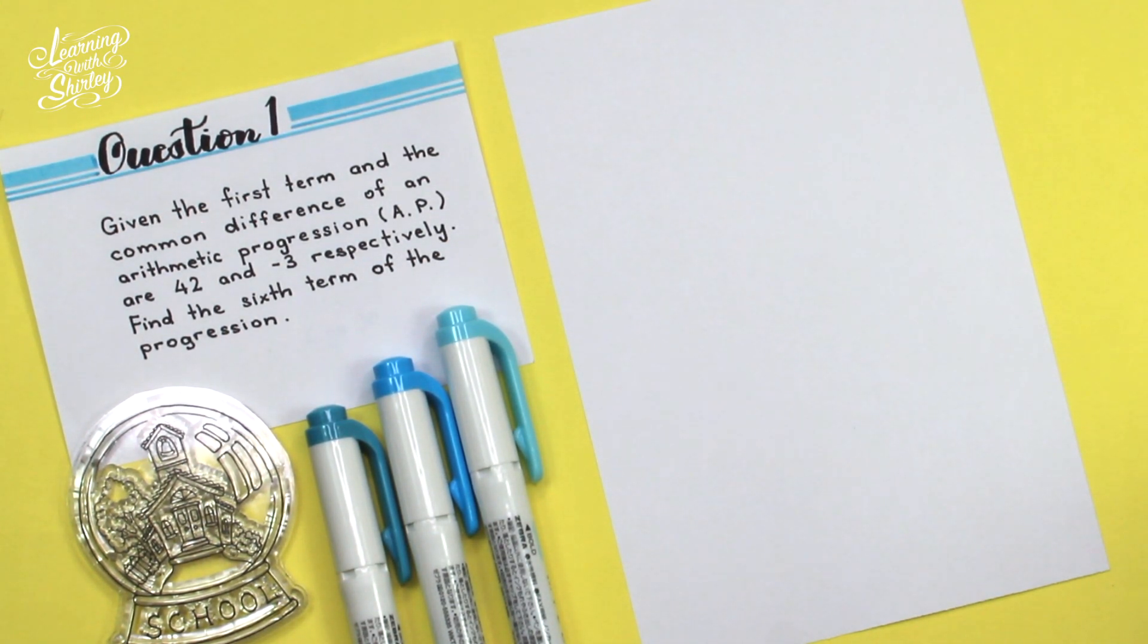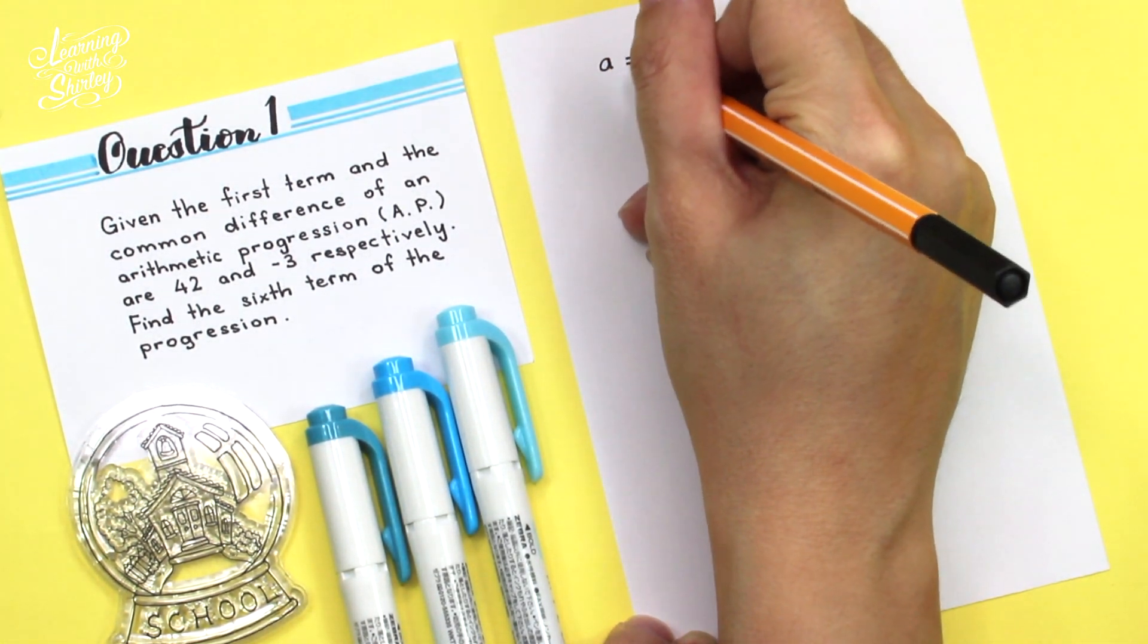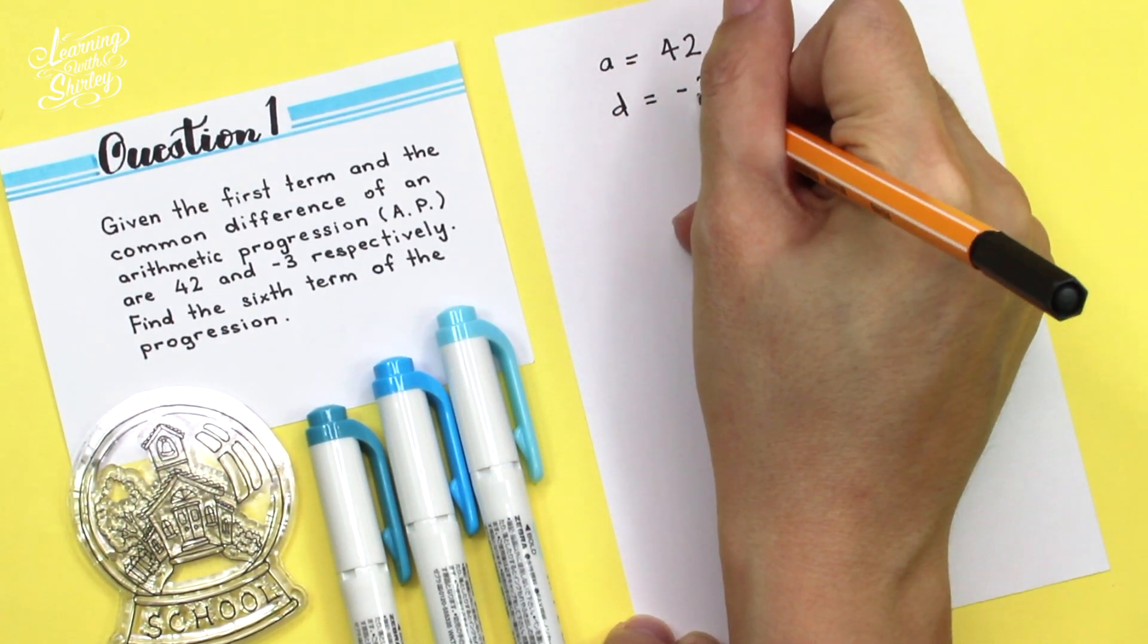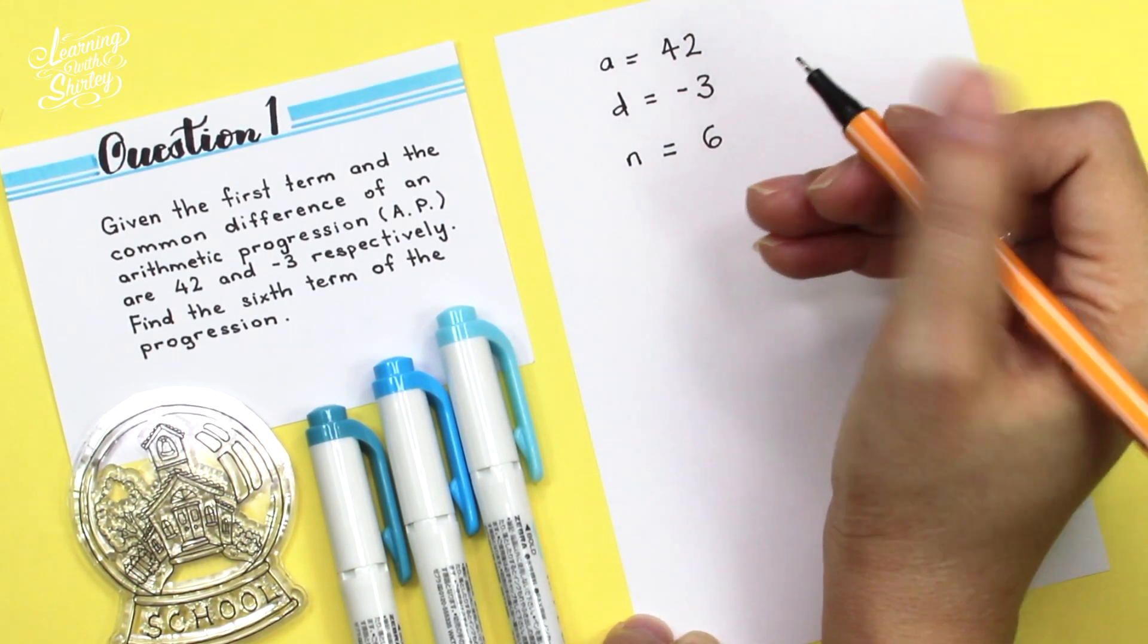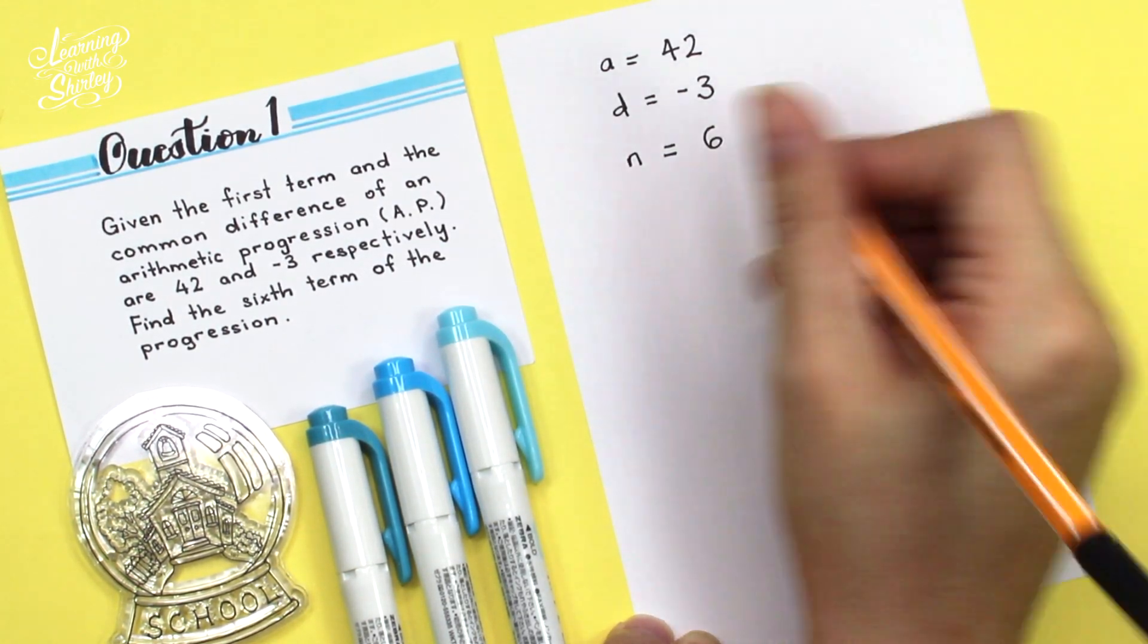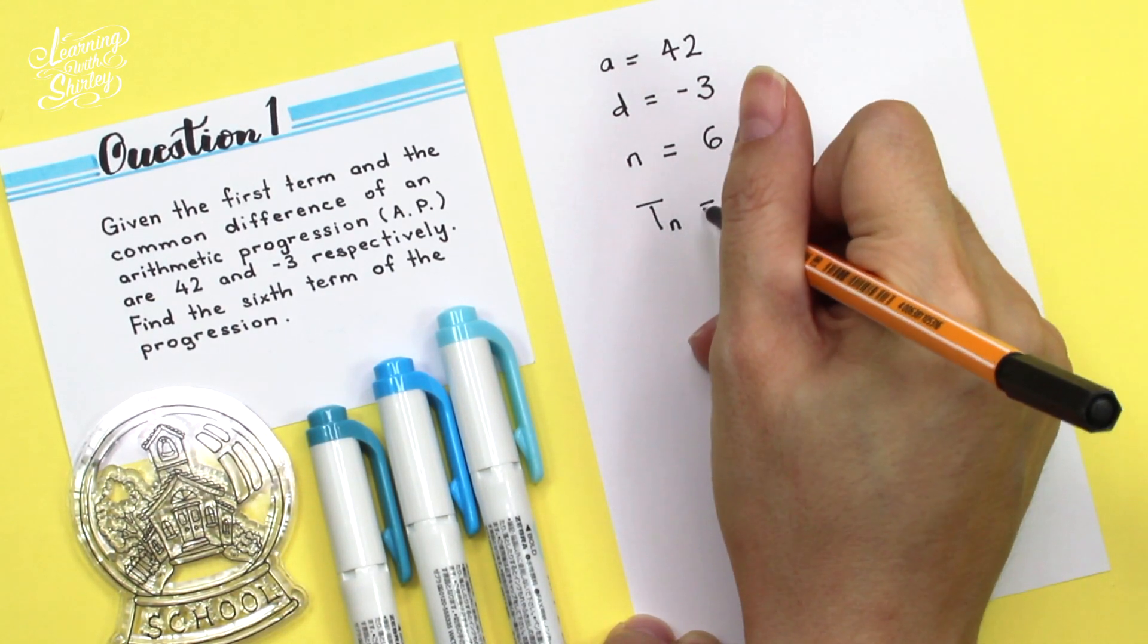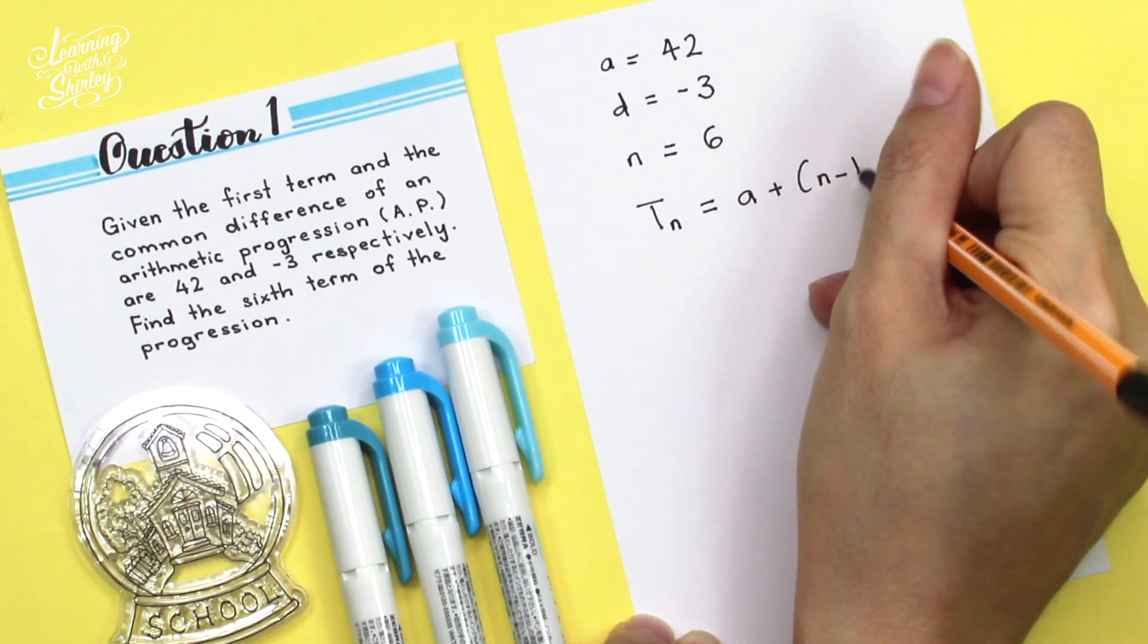So first of all, we list down the information given, which are A equals to 42, D equals to negative 3 and N, which is equal to 6. Because they're asking to find the sixth term of the progression. So to find the sixth term, we have to use the formula TN equals A plus N minus 1, D.